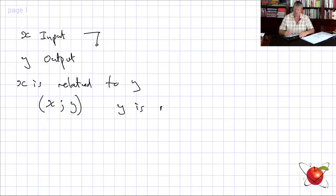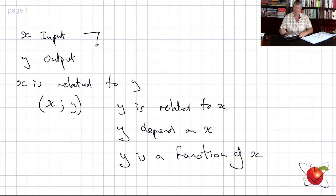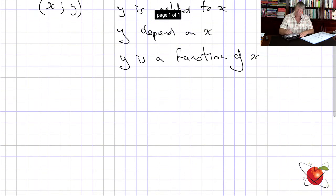So y is related to x — in other words, y depends on x. Therefore y is a function of x. That's all we're saying. The whole concept of the notation f(x) is just saying that y depends on the x we put in. Whichever x we put in, we get a y. So y is a function of x.